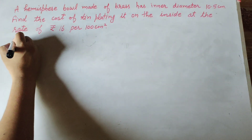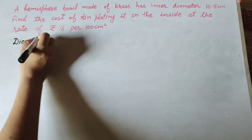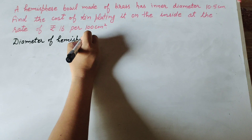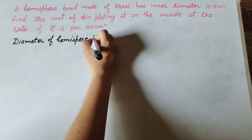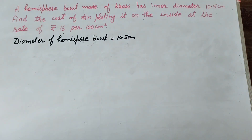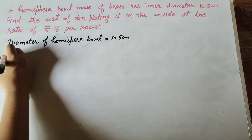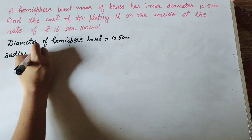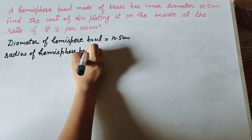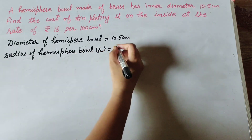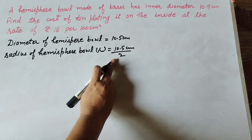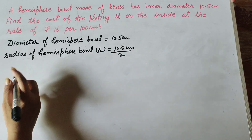Given is the diameter of the bowl. The diameter of the hemispherical bowl is equal to 10.5 centimeter. First we find its radius. Radius of the hemisphere bowl is equal to 10.5 divided by 2, that is diameter divided by 2, so 10.5 divided by 2. Now we find the surface area.